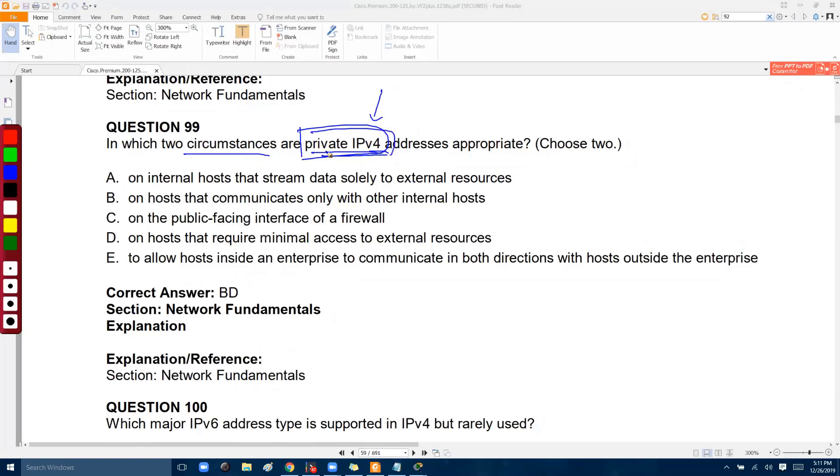These addresses are not recognized on the internet, which means if the internal host is trying to connect to external resources, we don't use this. However, on hosts that communicate only with other internal hosts, we can use private addresses. This can be the correct answer.